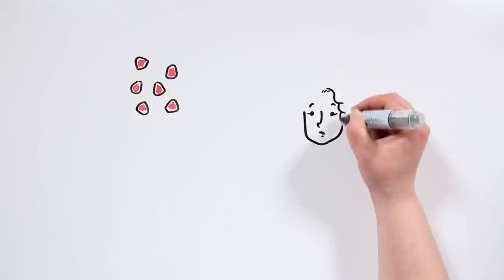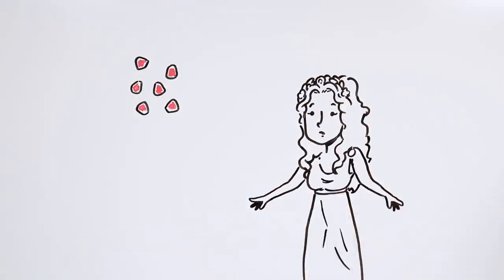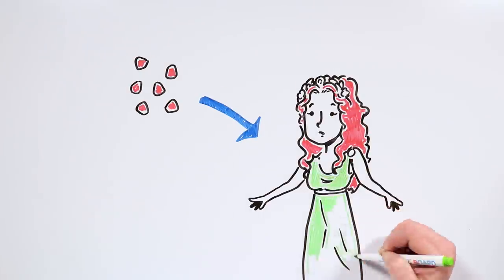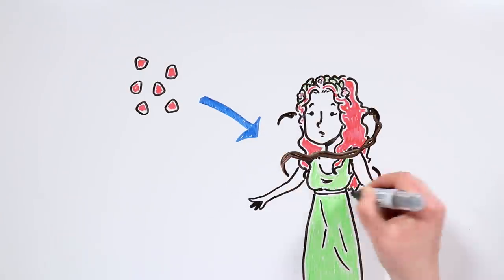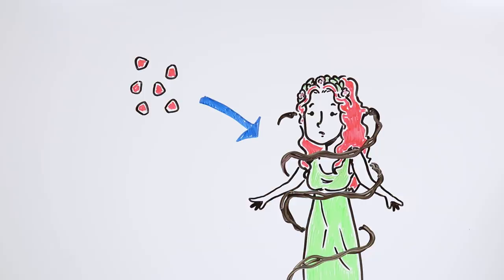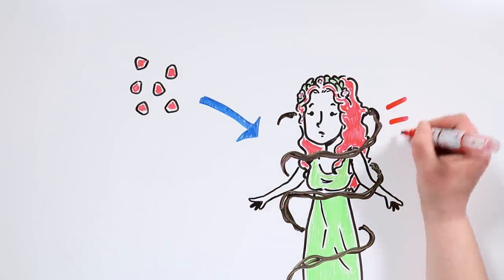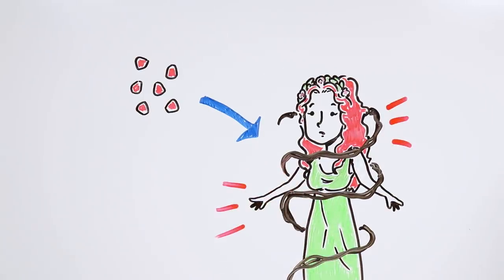All he did was offer Persephone six pomegranate seeds. She ate them, and when she did, she became eternally attached to the underworld. Because anyone who ate any food in the underworld would automatically become eternally attached to that place.